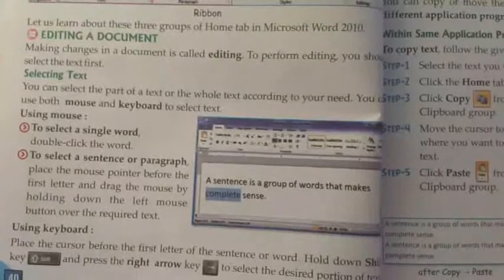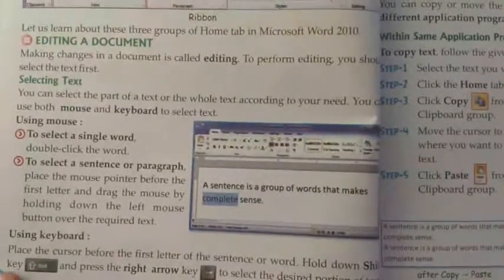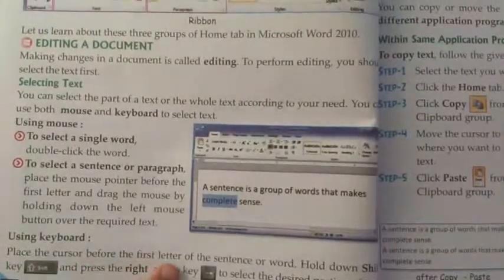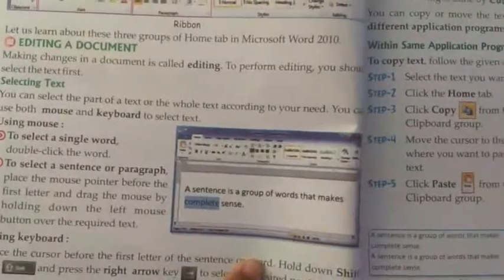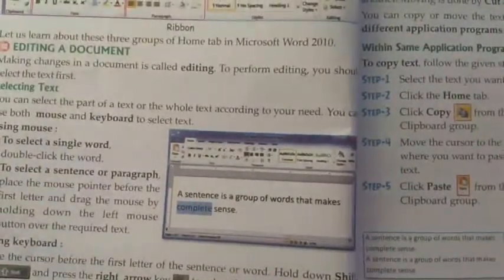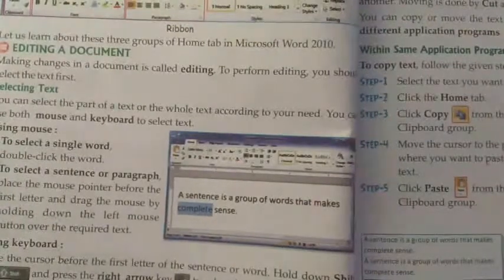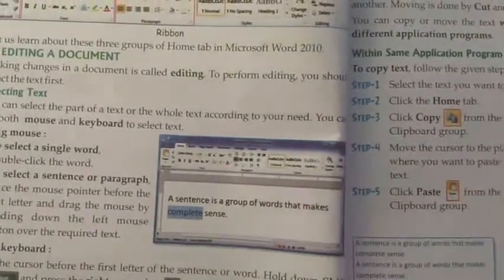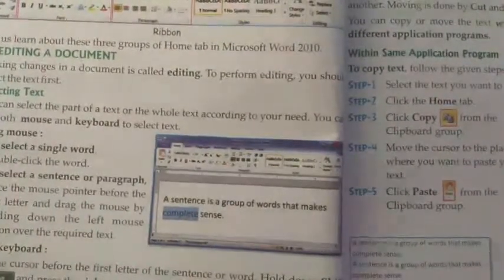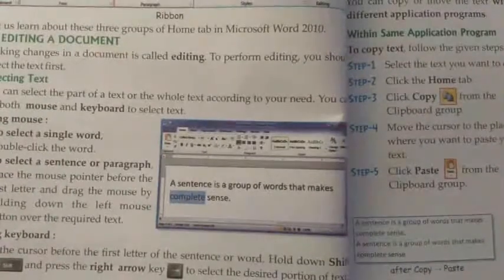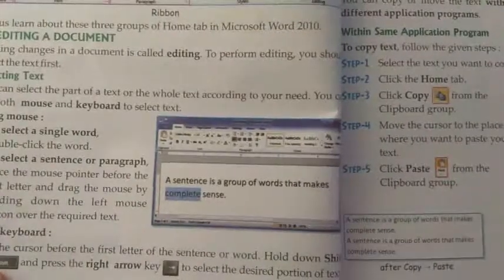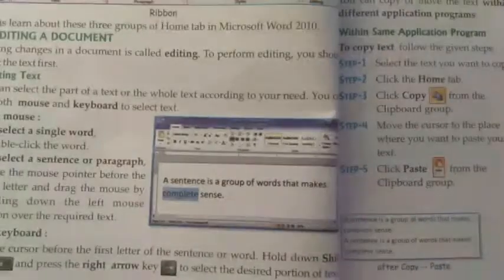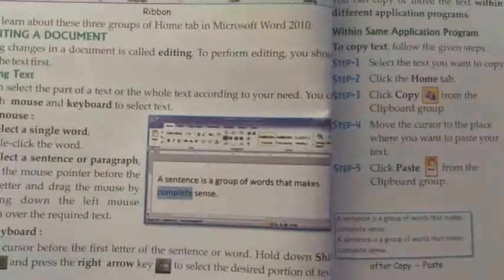Place the cursor before the first letter of the sentence or word, then hold down the Shift key and press the right arrow key to select the desired portion of text. To select the desired portion, hold the Shift key and the arrow key together.